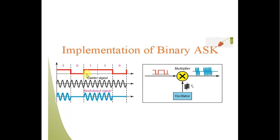You can see that we are doing digital data to analog conversion. The digital data looks like: 1, 0, 1, 1, 0. The carrier signal is modulated — for 1 the amplitude is high, and for 0 the amplitude is low, as you can see in the modulated signal.